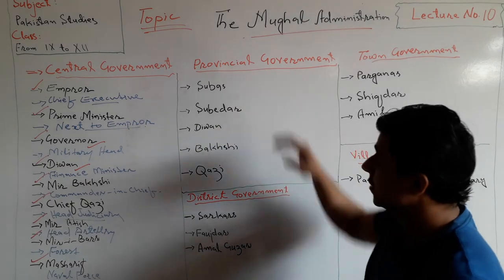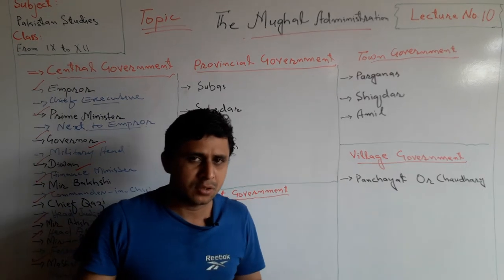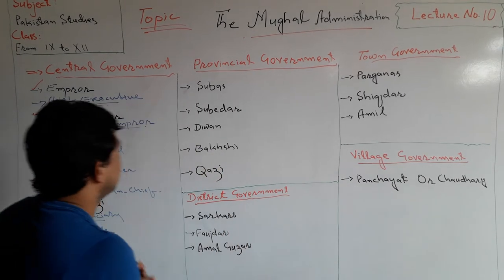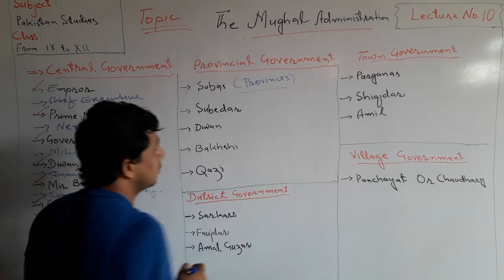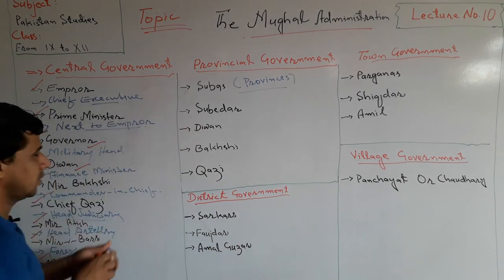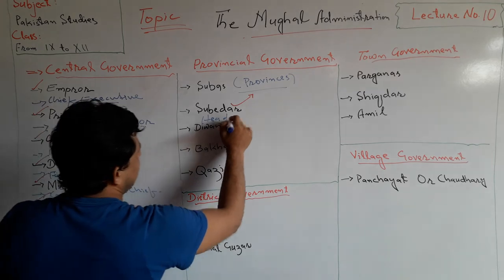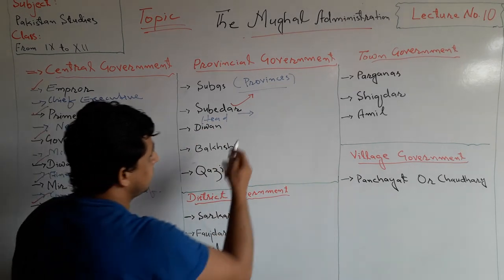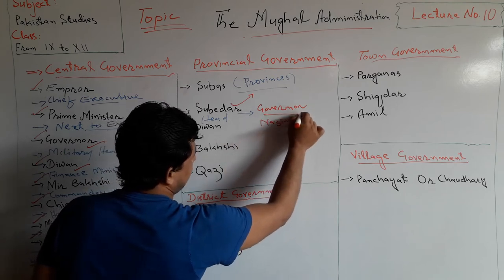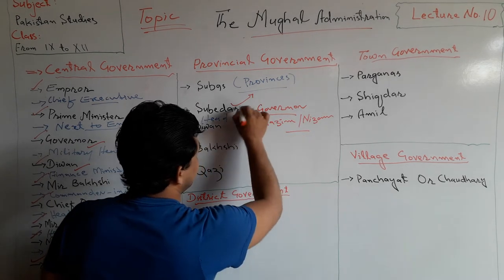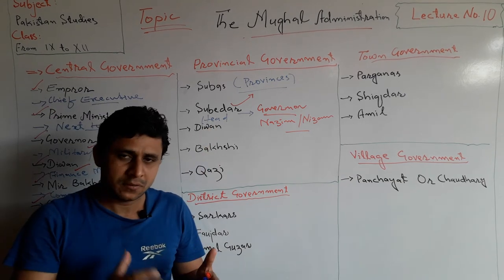For provincial government, the areas of the Mughal Empire were divided into Subas, which are now called provinces. The head of the Subas was the Subedar, who was also called by other names such as Governor, Nazim, or Nizam — all these names referred to the head of the provincial government.